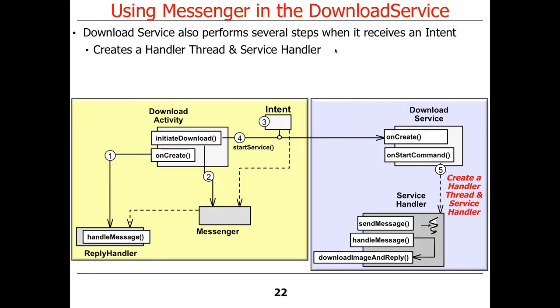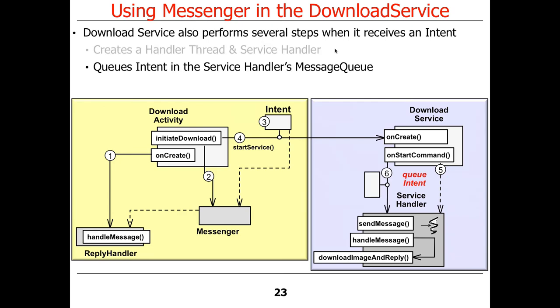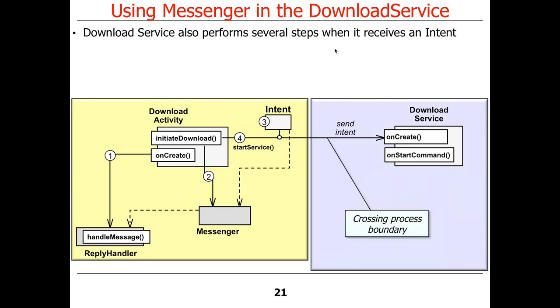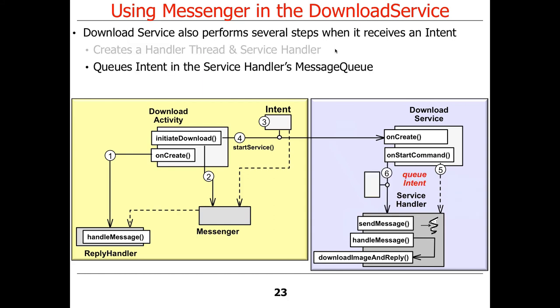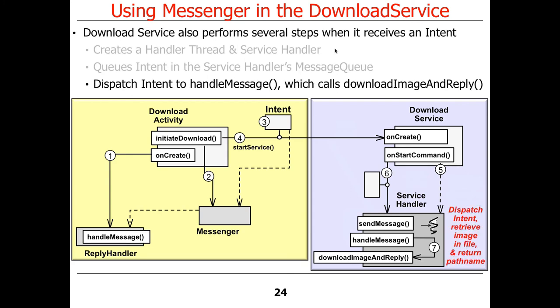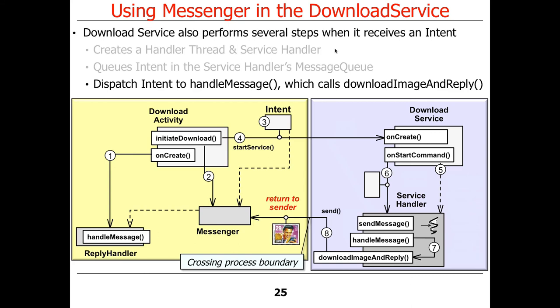The service then creates a service handler and handler thread, queues up the intent in the queue managed by the handler thread, and then the handler thread dispatches the intent, retrieves the image, downloads it, stores it to a file, and returns the path name back to the sender — a return to sender.